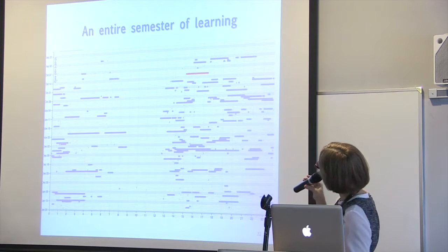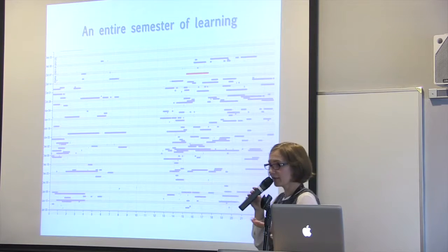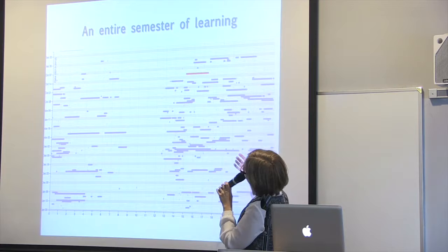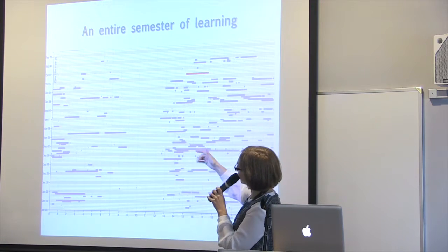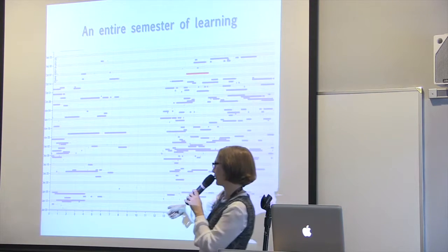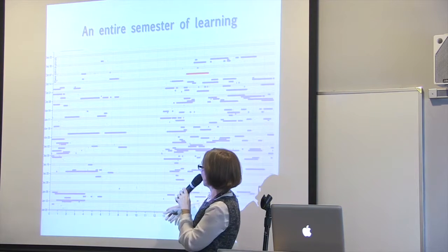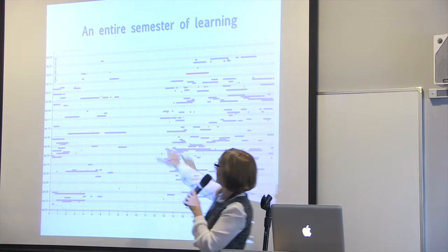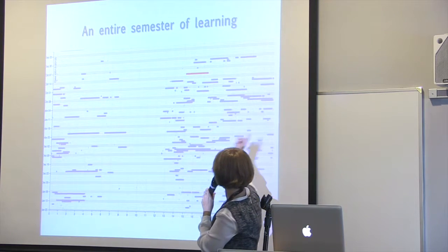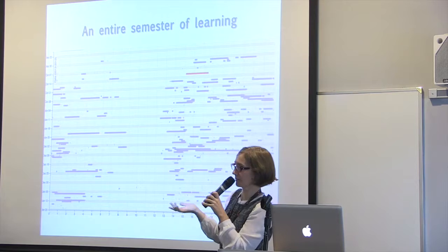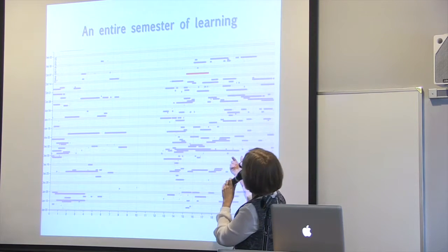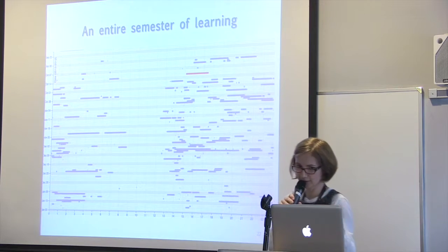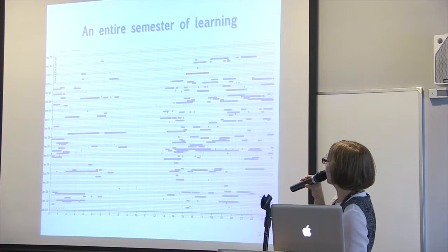Once we had this data, we said let's visualize the whole of it. The semester ran from approximately October 1st to January 20th, and these are the 24 hours of the day. Basically the user is sleeping here and that's the rest of the time they're logging in and spending time on the course. This user was very active in this course.